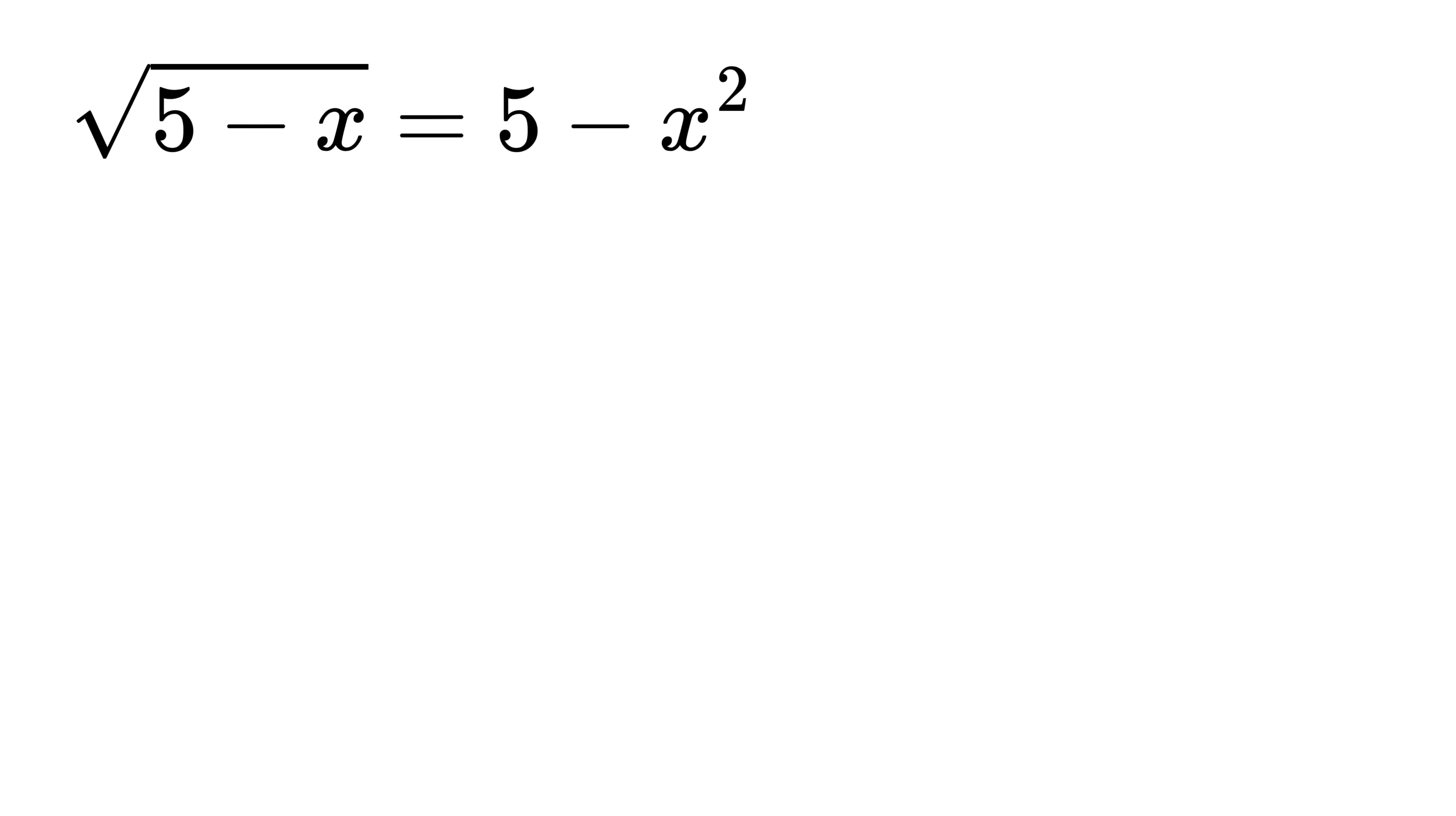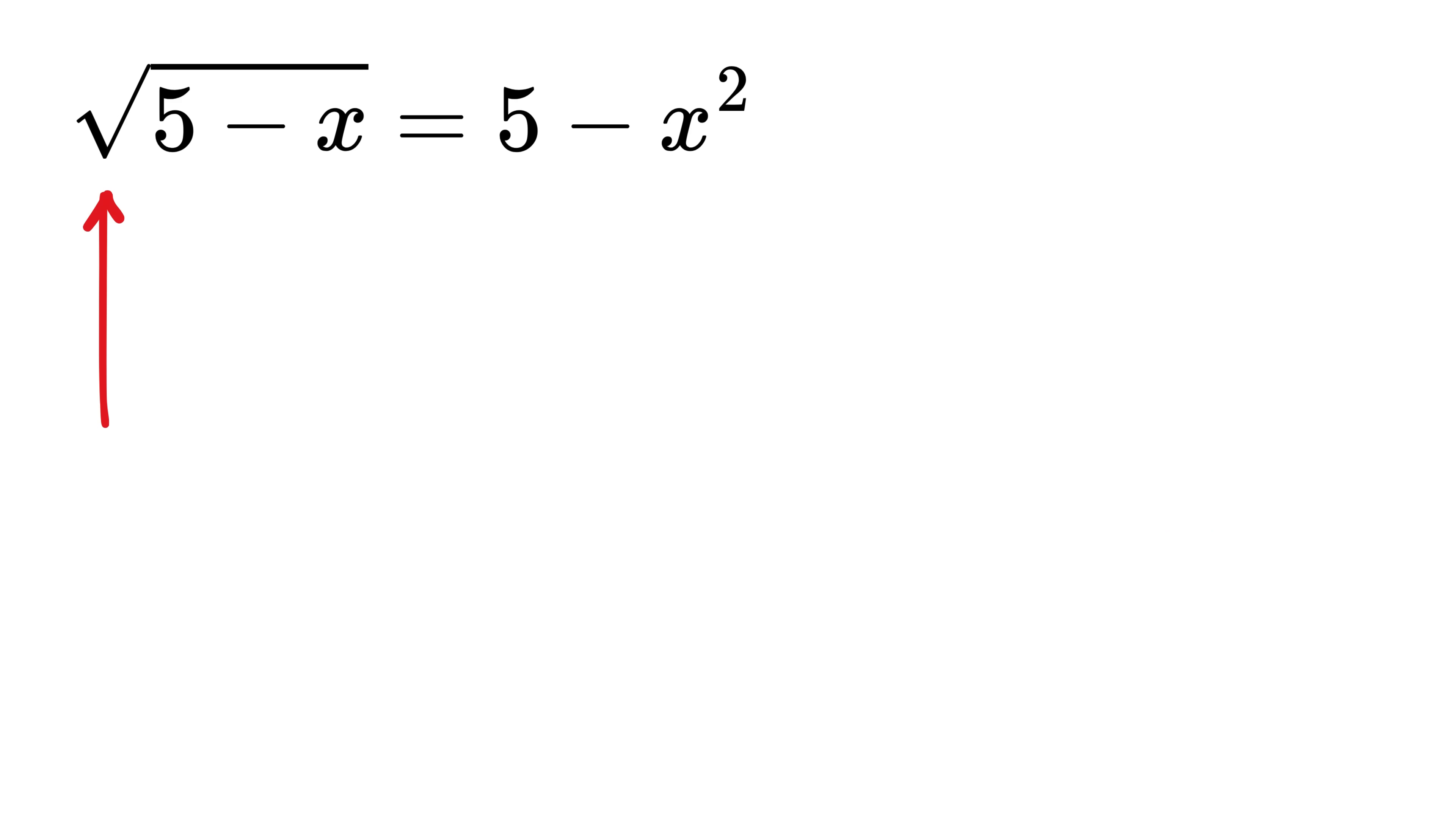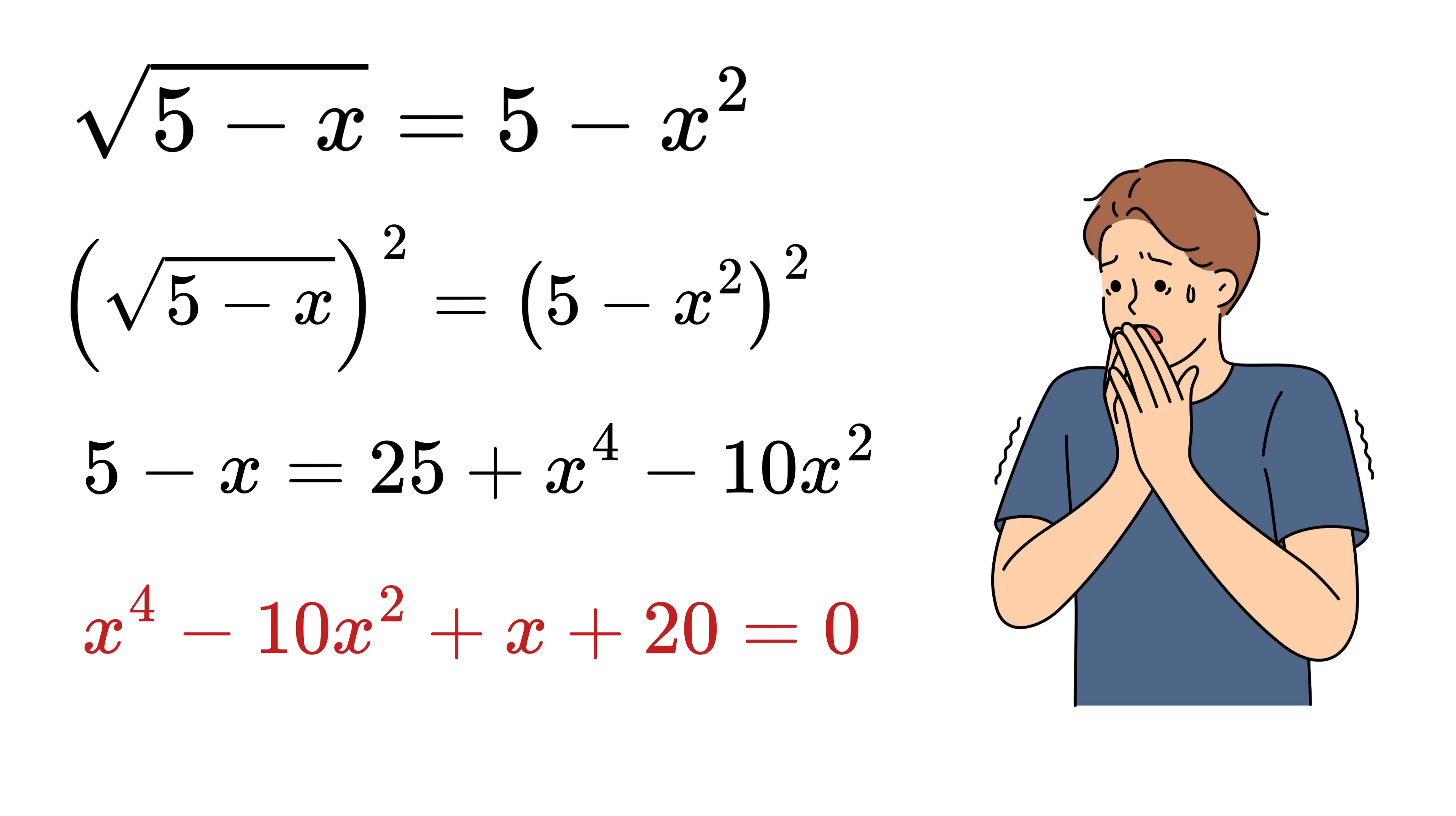We are given this problem, and we need to find the value of x. As soon as we see these types of problems, the very first thing that comes to mind is to eliminate the square root by squaring both sides of the equation. But look carefully. The right side already contains a square. So, if we go ahead and square both sides directly, we will end up with a quartic, or a degree 4 equation, which is super hard to solve.